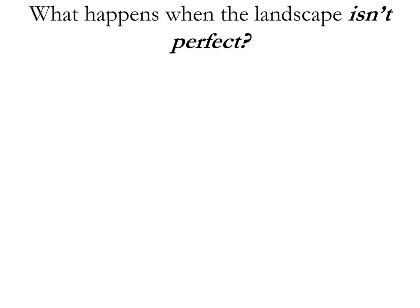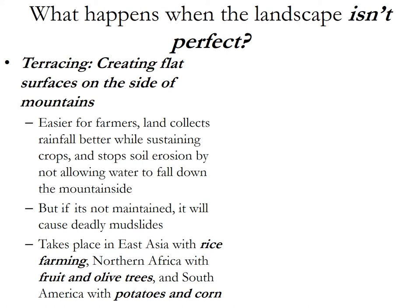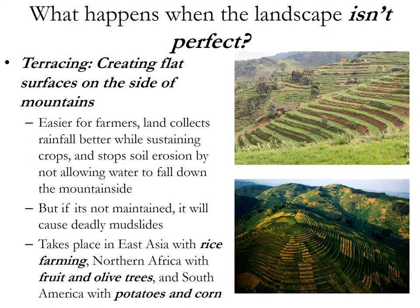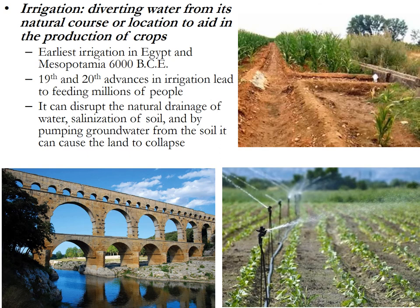Now we can move on to talking about landscape. Von Thunen predicted that all landscapes are perfect in theory, and we know that's just not true. So say you're farming on the side of a mountain — very difficult. You terrace it: create flat surfaces on the mountain. This collects rainwater better, you can plant a lot more crops, and it stops soil erosion. But if it's not maintained, you get mudslides and people die. This also isn't limited to East Asia and rice farming — we see terracing in North Africa with Mediterranean-style agriculture and in South America with grain agriculture like potatoes and corn.